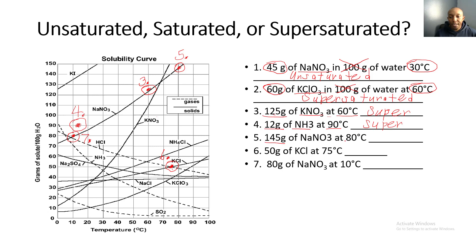For number five, 145 grams of NaNO₃ at 80 degrees Celsius — my plot is actually on the line, so that tells us it is saturated. Number six is 50 grams of KCl at 75 degrees Celsius, and this point is also on the line for KCl, so that is saturated as well.